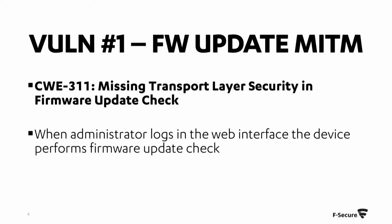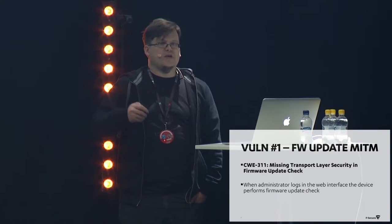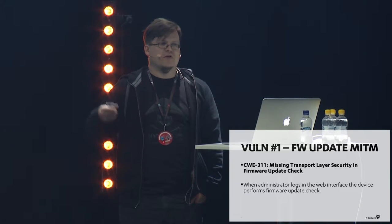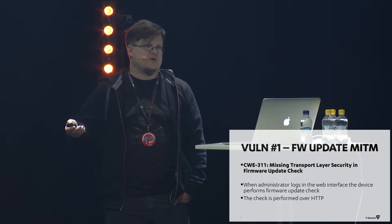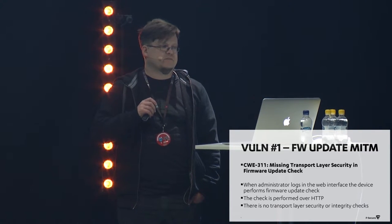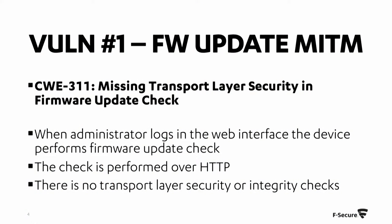This is the first vulnerability. It's a classic mistake: you have a resource on the network and you fetch it, but you don't have any transport layer security — usually HTTPS. It's related to the firmware update check. When you log on to the system, it automatically checks for a new firmware every time. And it is HTTP — no protection at all. There is no integrity check either, so if something is done to the downloaded file, no one will notice.